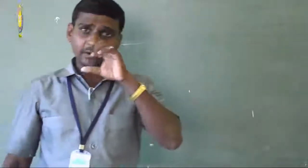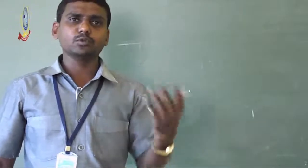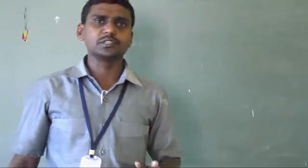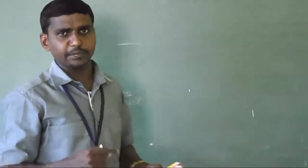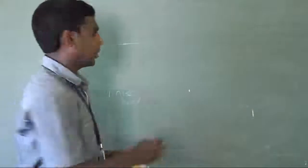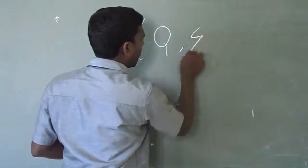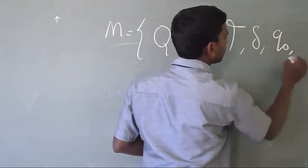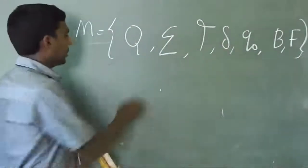Every machine has some parameters. For example, finite automata has four tuples, pushdown automata has seven tuples. Similarly, the Turing machine also has seven tuples — seven parameters. These parameters are very important to run this machine. The formal definition is: M equals (Q, Σ, Γ, δ, q0, B, F).